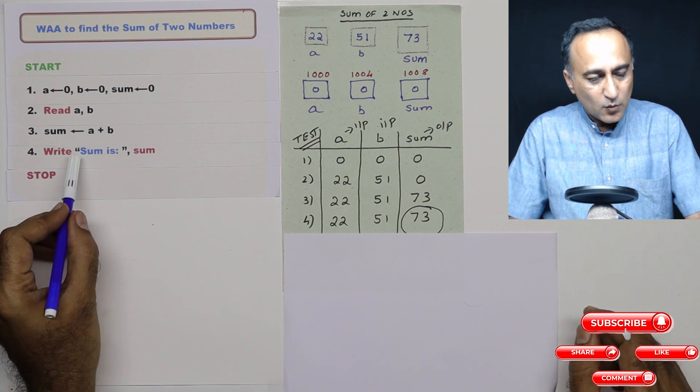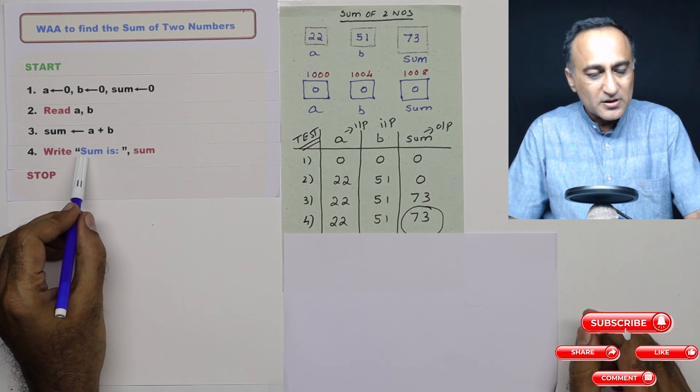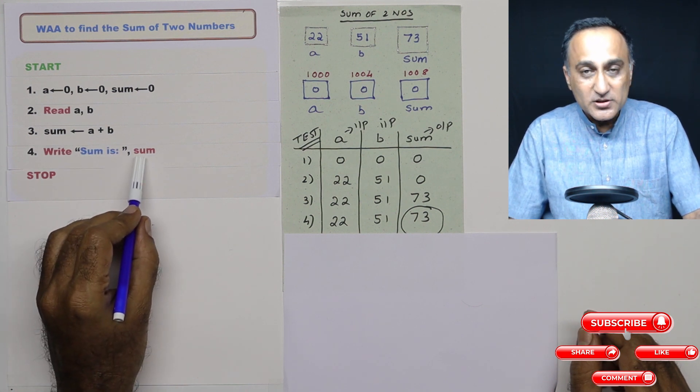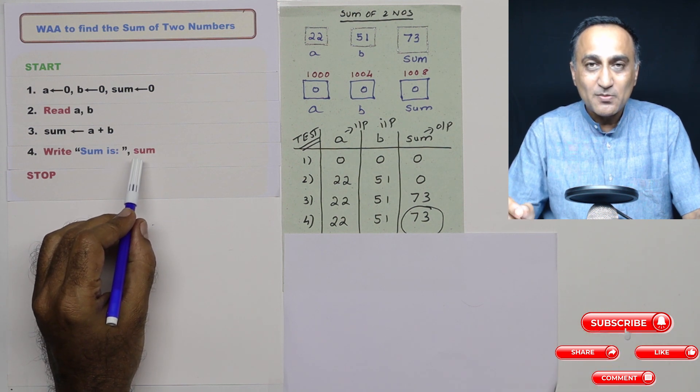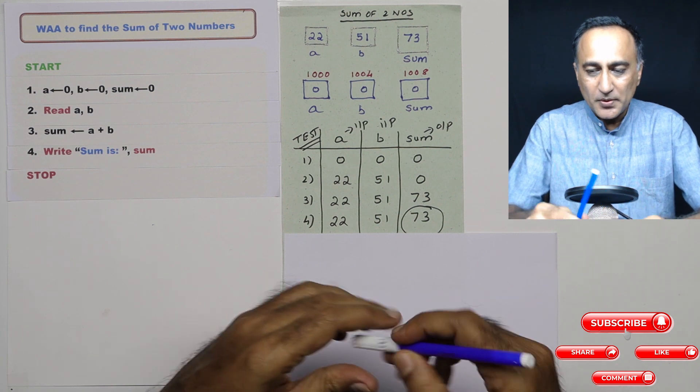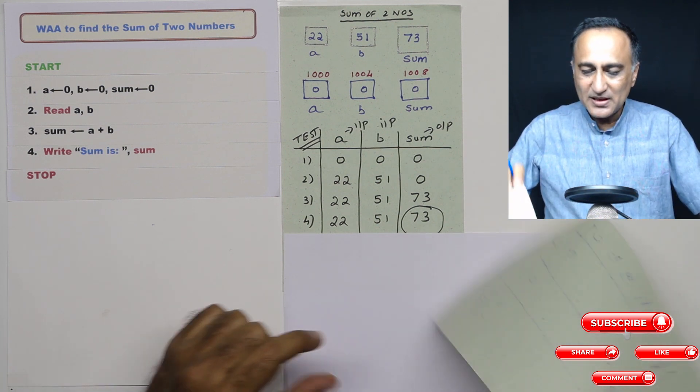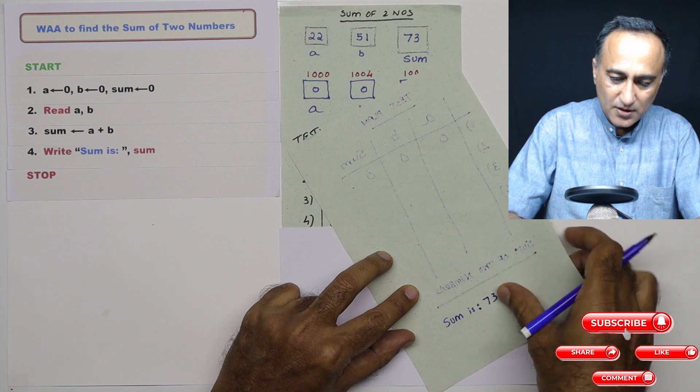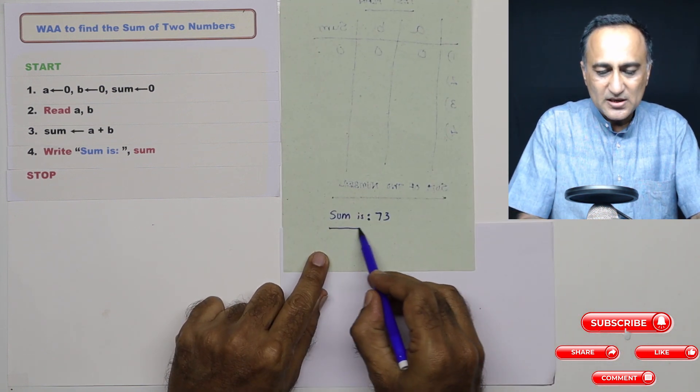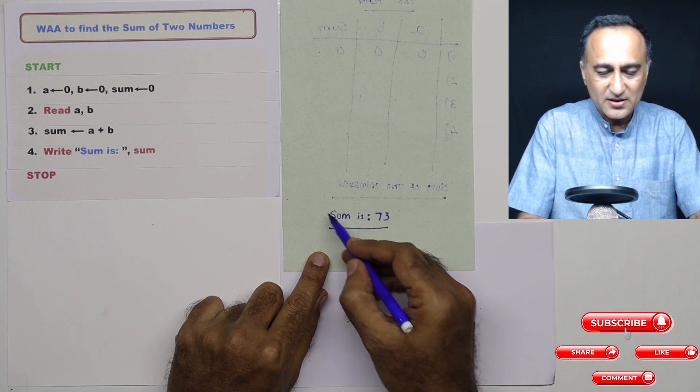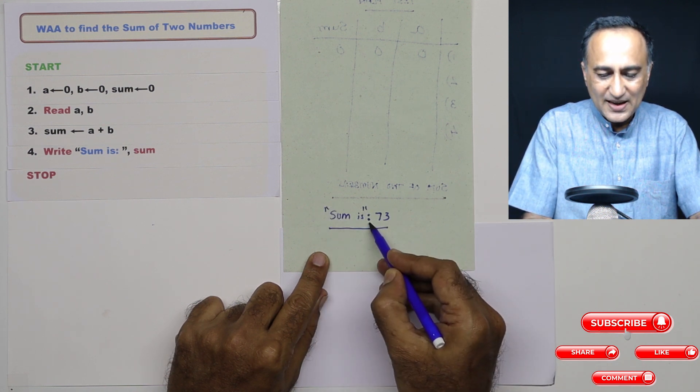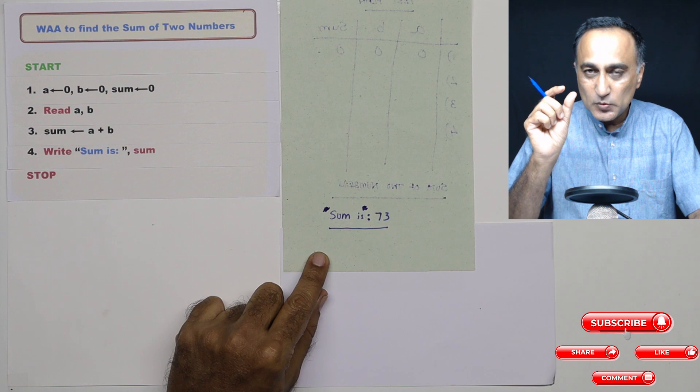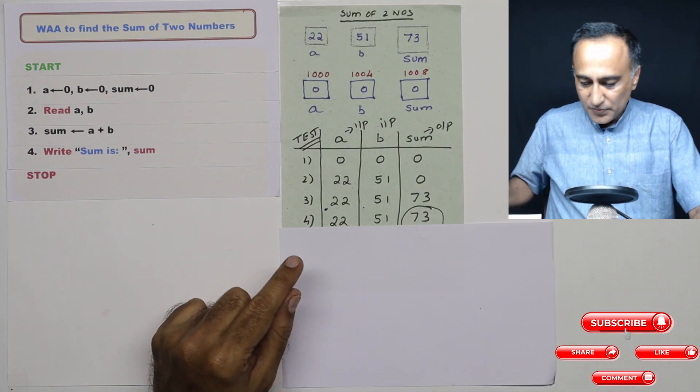And finally, what I am doing in the fourth step is, I am saying write sum is sum, which is 73 is going to be printed on the screen. A little bit of explanation here, whatever is within this double code is going to be printed on the screen as it is, it's going to say sum is colon. So this is a message. And whatever is outside the double code is actually the value of sum or the variable sum. So the way it is going to print on your screen is, it's going to look something like this, it's going to say sum is colon 73. So on your screen, you can expect to see something like this, sum is colon 73.